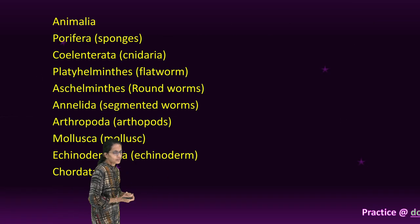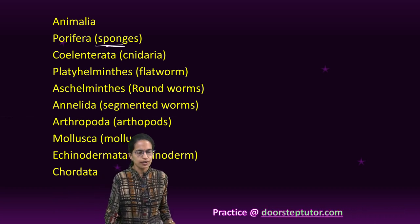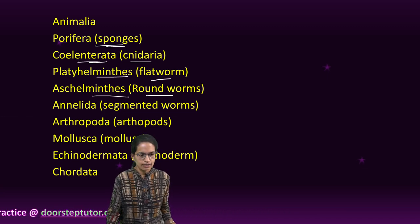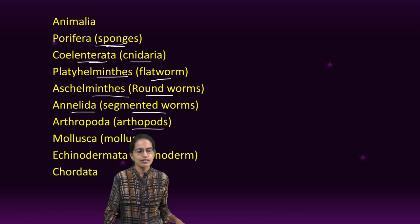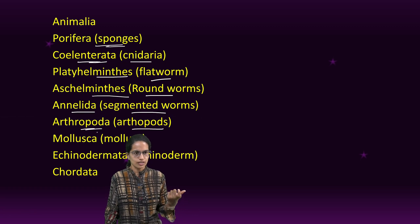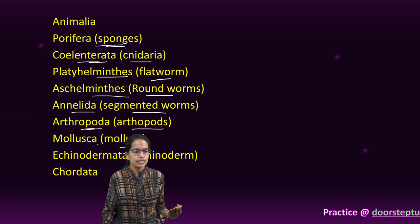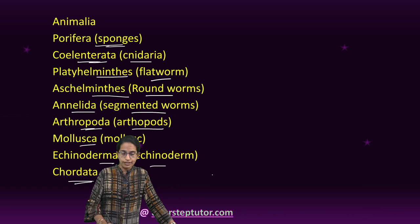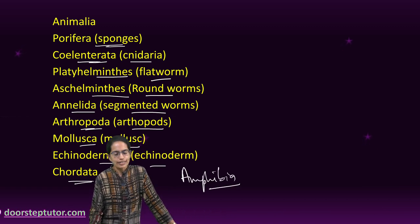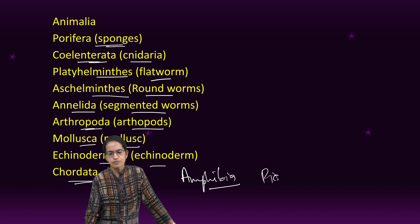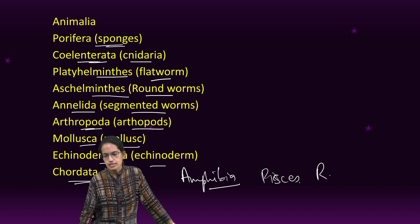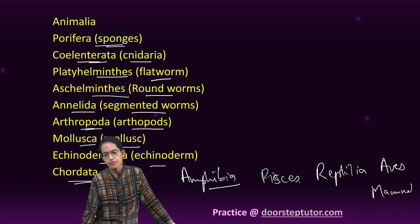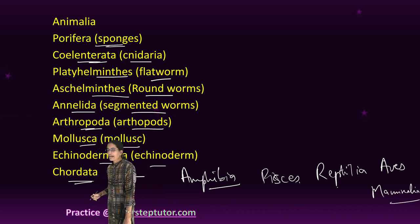Under Animalia, classification starts with sponges (Porifera), then Coelenterata (sea creatures), flatworms (Platyhelminthes), roundworms (Aschelminthes), segmented worms (Annelids), then Arthropoda (insects and higher-order arthropods), Mollusca, Echinodermata, and finally Chordates. Under Chordates, there are five sub-classifications: Amphibia (live on land and water), Pisces, Reptilia, Aves (birds), and Mammalia.